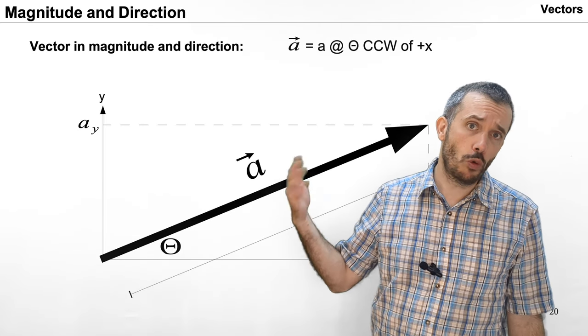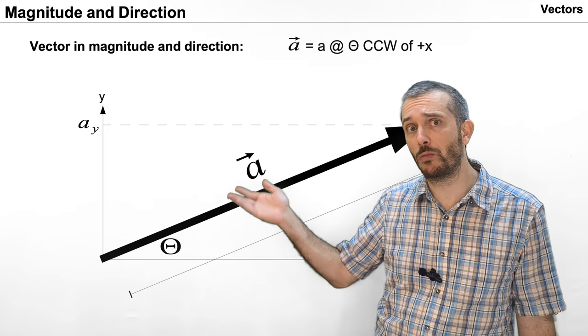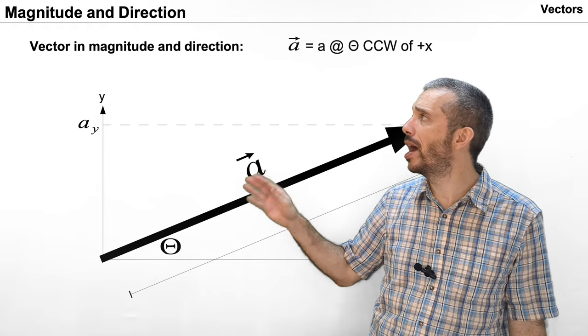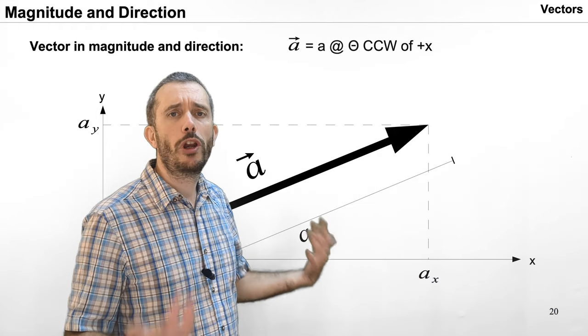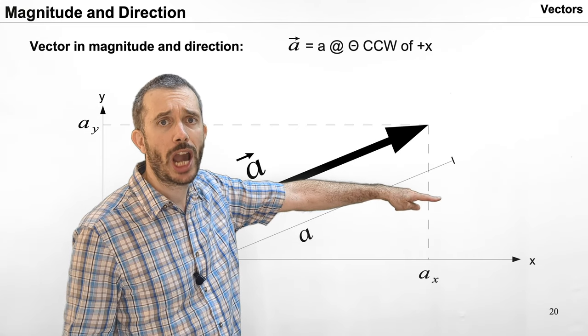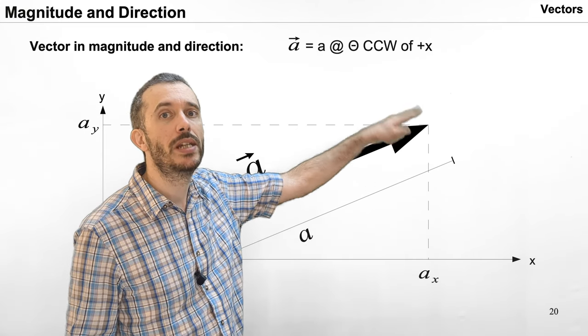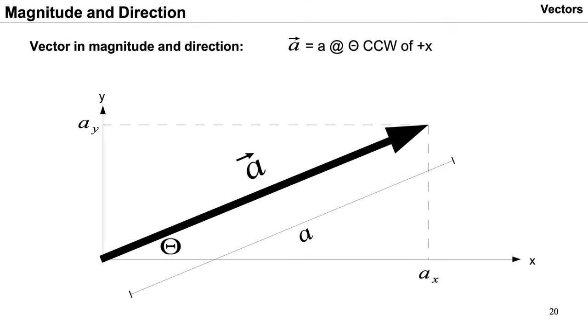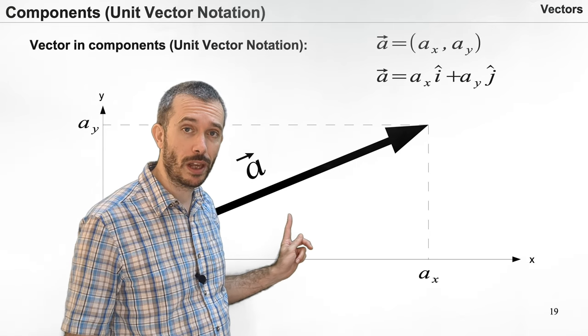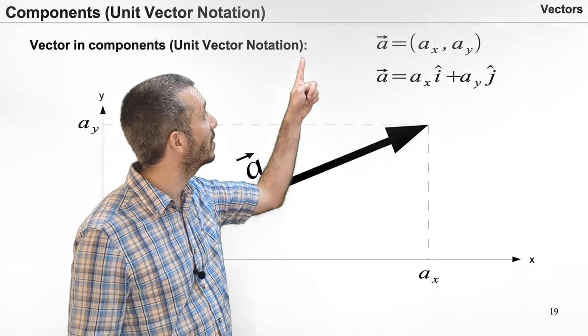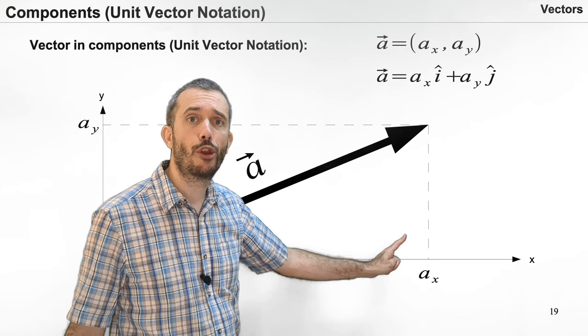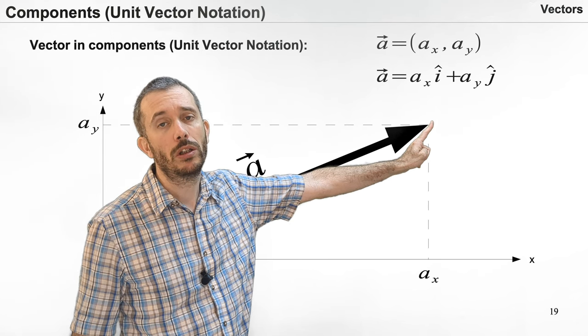Vectors can be expressed in two ways. One of them is the one that is the more natural one which is giving the magnitude of the vector and the direction. If not otherwise stated, the default is that we give angles as measured counterclockwise from the x-axis. Another way to express a vector is to give its component along the x and y-axis. For example, five along the x-axis and then three up along the y-axis.